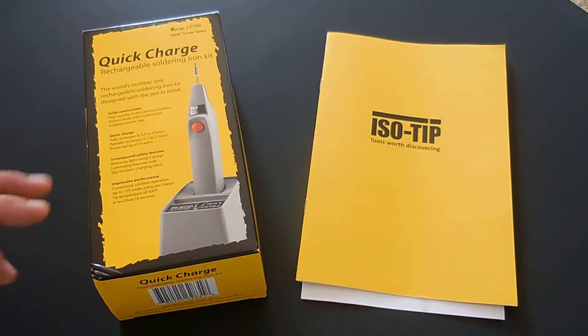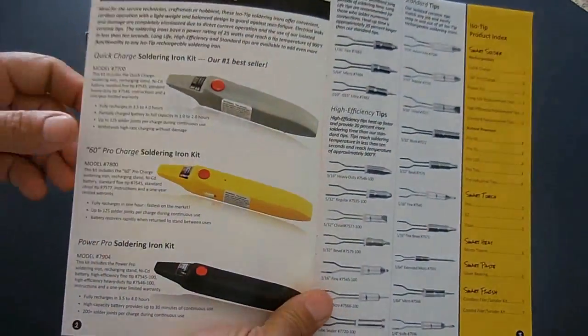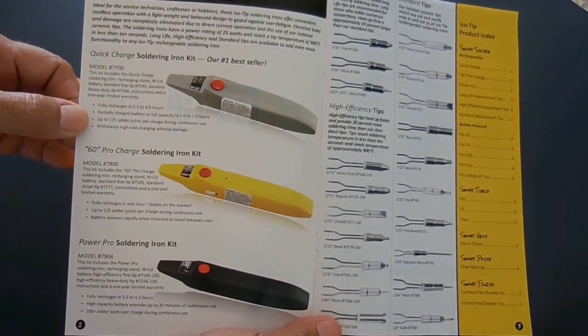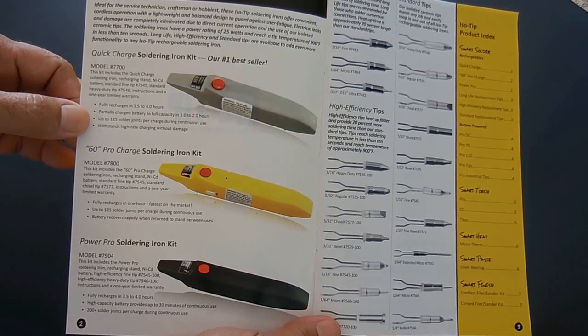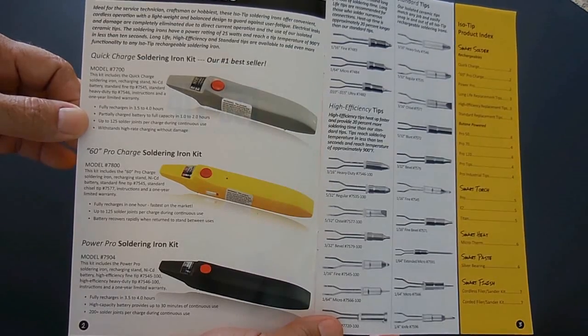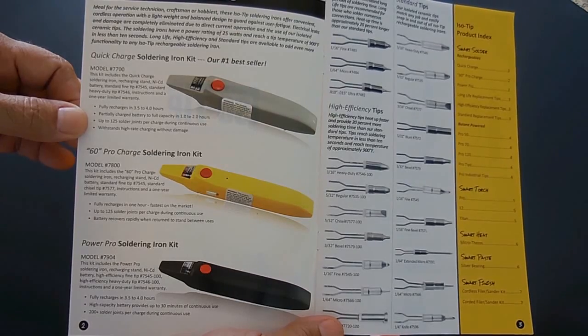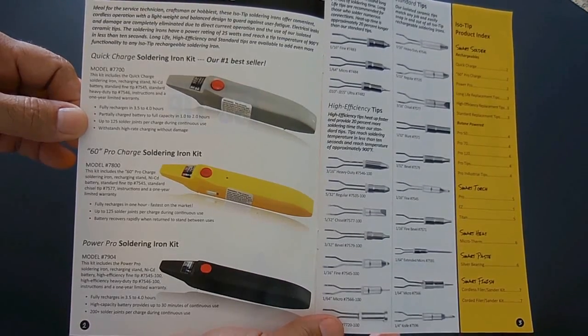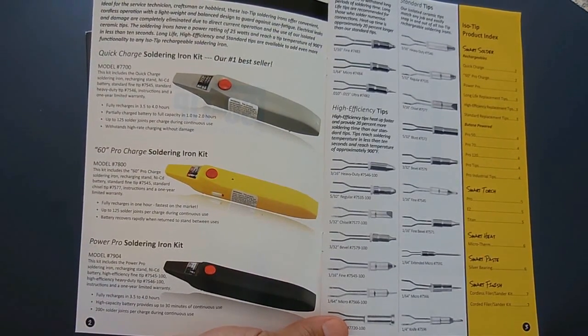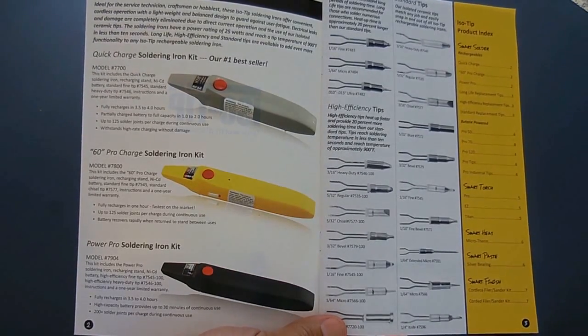This company does sell electronic as well as gas soldering irons. Take a look right here. This one, model 7700, is the one I'm going to be showing you in a minute. That one charges fully in three and a half to four hours, and it allows you to solder up to 125 joints per charge during continuous use. So if you put it back in the holder as you're using it, of course you're going to get more than 125 charges, because you're allowing the soldering iron to recharge as you're using it.